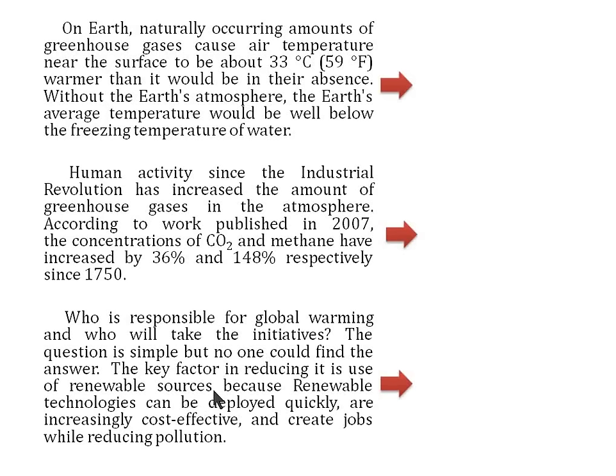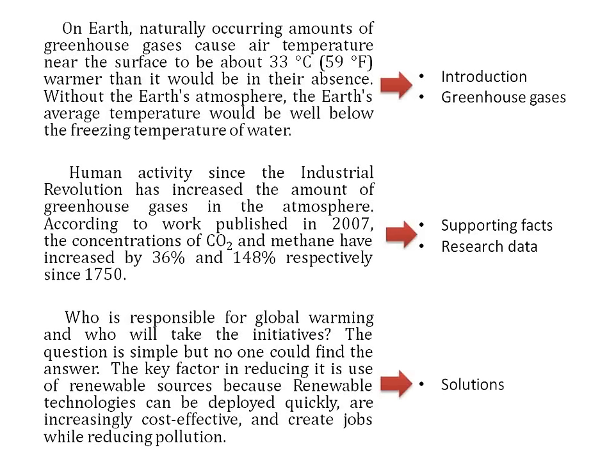So technically, in order to write the summary, you need to mention everything: the importance of greenhouse gases, how they have increased, and what the solution is. You are not supposed to write anything from your own knowledge — don't write anything related to global warming, don't write any solution you knew previously. Just mention only the one solution mentioned by the author. You might have noticed that the data is related: first is introduction about greenhouse gases, second is supporting facts and research data, and third is solutions.